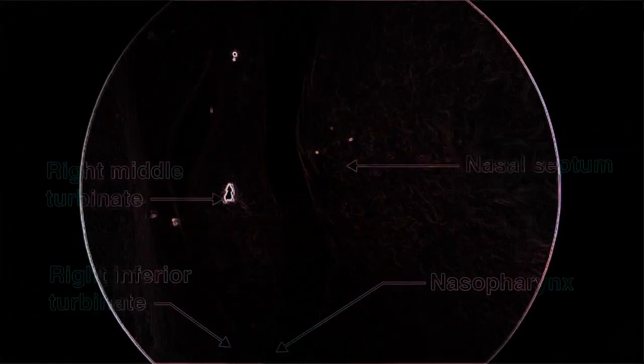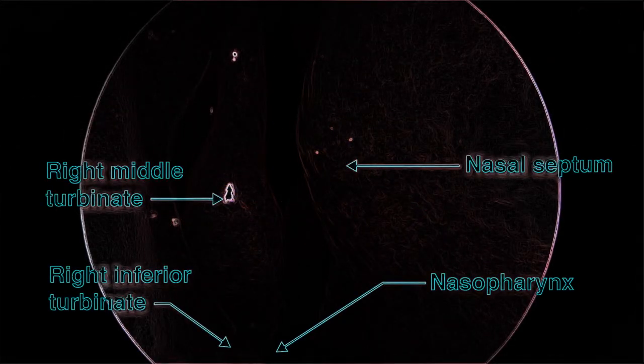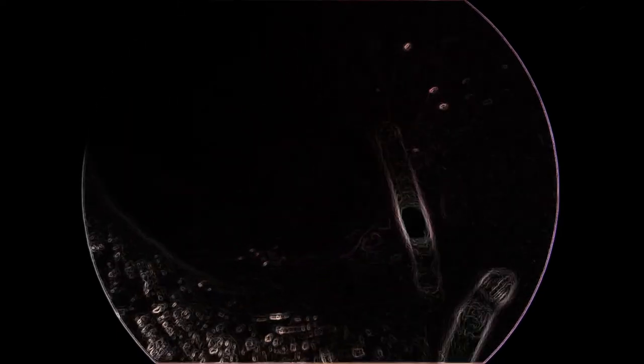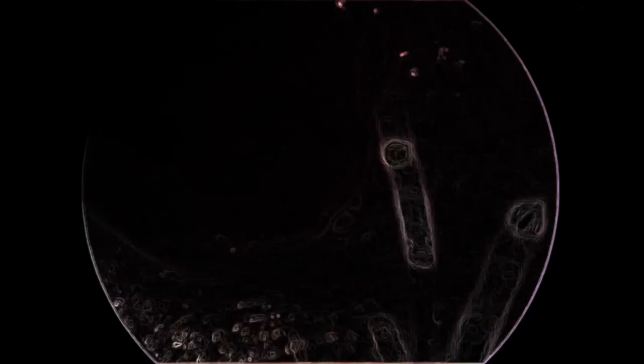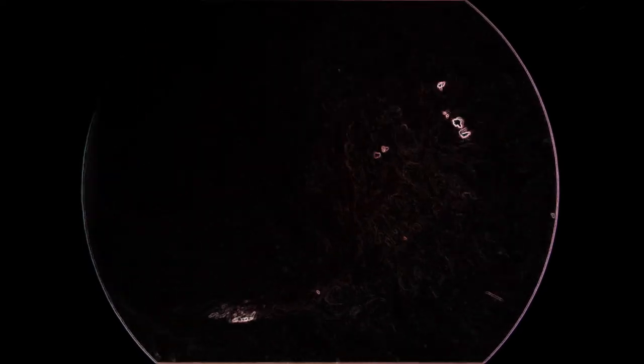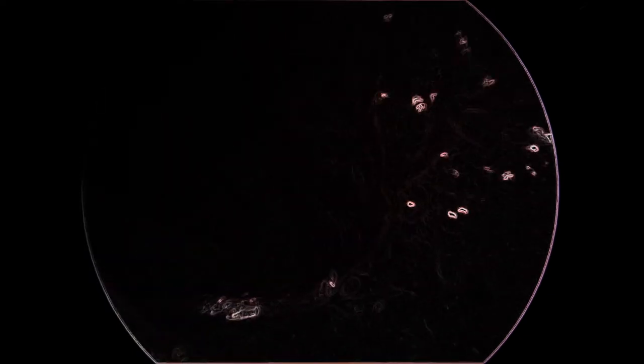The mucosa overlying the vessels in the anterior nasal cavity is thin and sensitive to injury. Exposure to cold, dry air and recurrent trauma are common triggers of anterior nasal cavity bleeding. A deviated nasal septum can result in excessively turbulent airflow, which can further exacerbate mucosal trauma in the anterior nasal cavity. Topical silver nitrate cauterization is generally performed for anterior epistaxis.